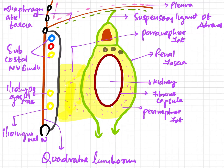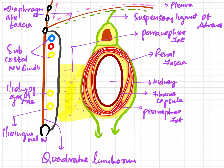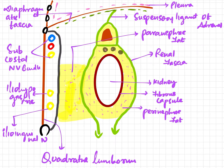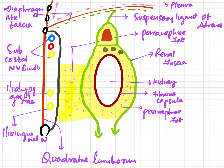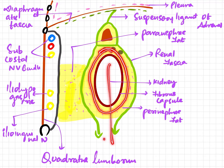Now coming to the perinephric fat, or perirenal fat. The word 'peri' itself means around or next to, so perirenal fat is a layer of adipose tissue that surrounds the fibrous capsule. Its function is to provide cushioning to the kidney, and also insulating properties. In some diseases, this perinephric fat will be depleted.